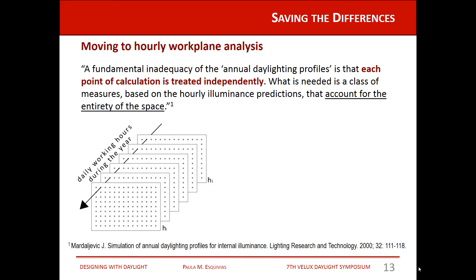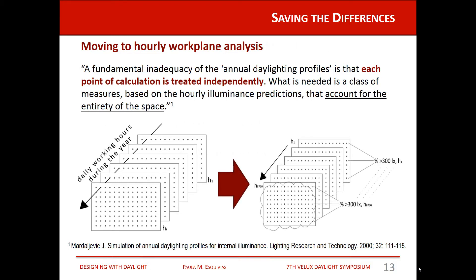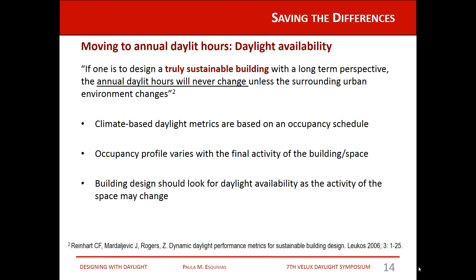What we propose is to move to an hourly work plane analysis: taking the annual illuminance profile and performing an analysis for each hour in order to know the simultaneous performance of the work plane, as shown in the graph. Furthermore, climate-based daylight metrics usually focus on a certain temporal range, but for a more sustainable building we should look at the whole diurnal illuminances, in order to capture the daylight potential of a building as its use may change over time.